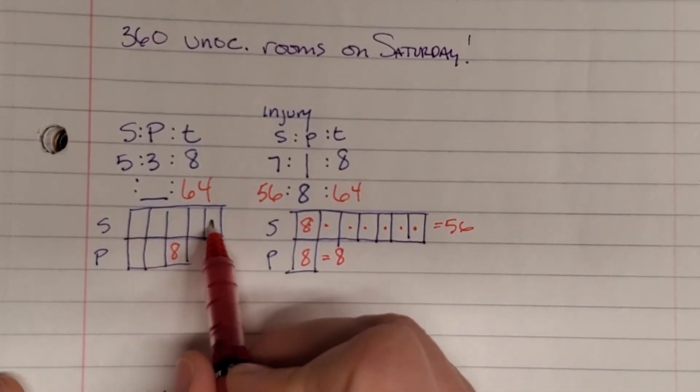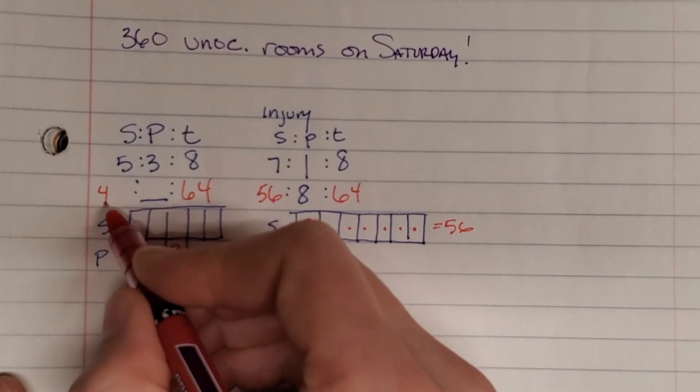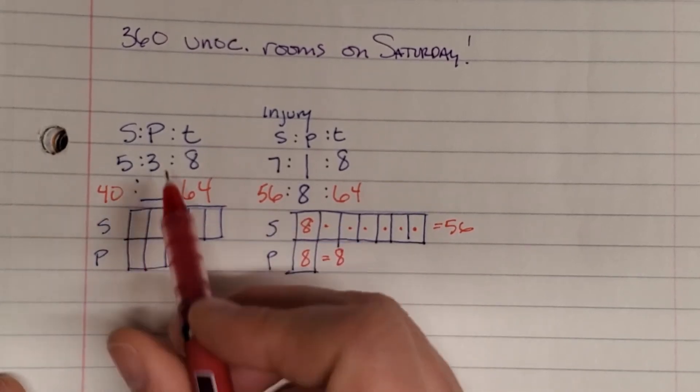One, two, three, four, five. Five times eight is 40. So he could do 40 sit-ups. How many push-ups?